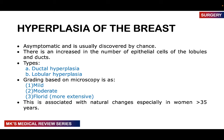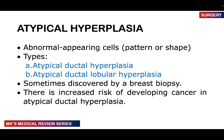Breast hyperplasia is often asymptomatic and usually discovered by chance. There is an increase in the number of epithelial cells of the lobules and ducts — either ductal or lobular hyperplasia. The grade is based on microscopy: mild, moderate, and florid (more extensive), often associated with natural changes especially in women above 35 years. In atypical hyperplasia, cells appear abnormal in shape, pattern, and arrangement. It can be atypical ductal hyperplasia or atypical lobular hyperplasia, often just discovered on breast biopsy. There is an increased risk of developing cancer in atypical ductal hyperplasia.